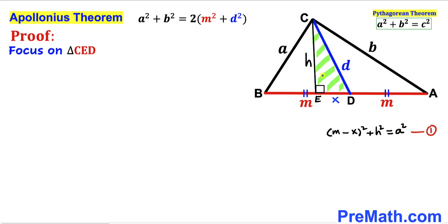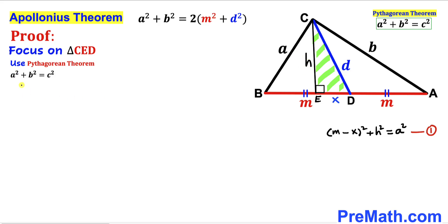Now focusing on right triangle CED, we apply the Pythagorean theorem again. The hypotenuse is d, and the two legs are x and h, giving us x² + h² = d². This is equation number two.